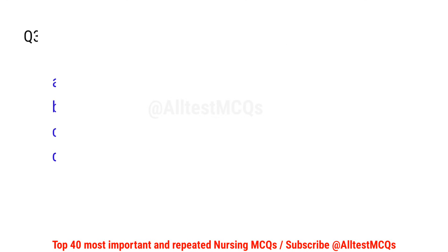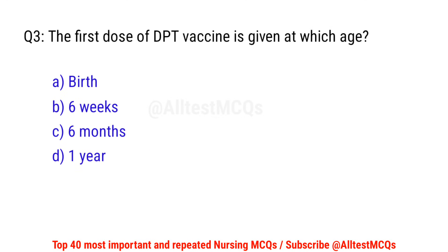Question No. 3: The first dose of DPT vaccine is given at which stage? The right option is B: Six weeks.